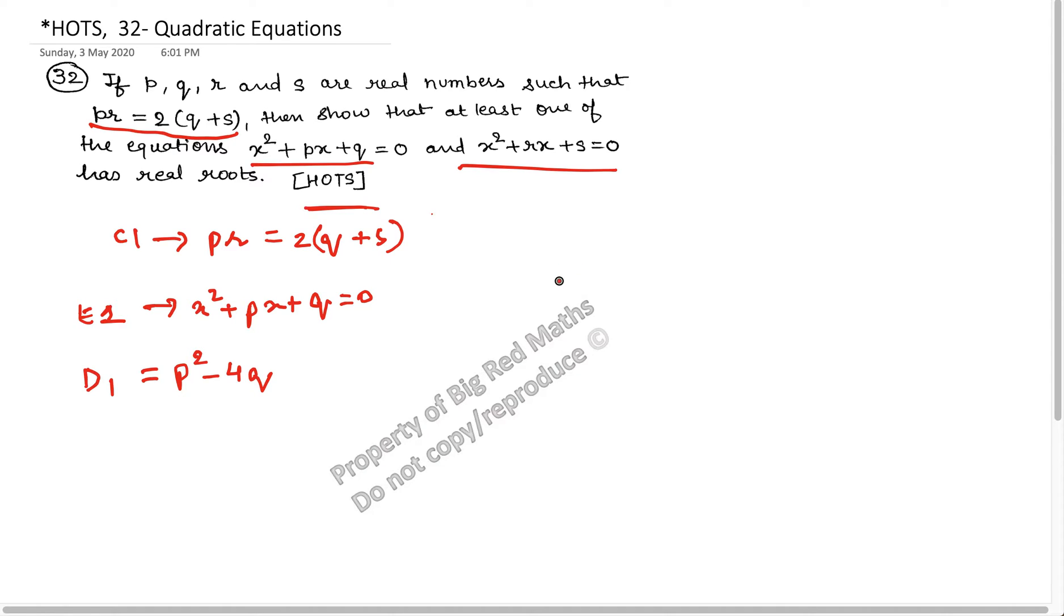Similarly, let me see the equation 2. What is the equation 2? Equation 2 is x² + rx + s = 0. So equation 2 will become equal to r² - 4 times of s.